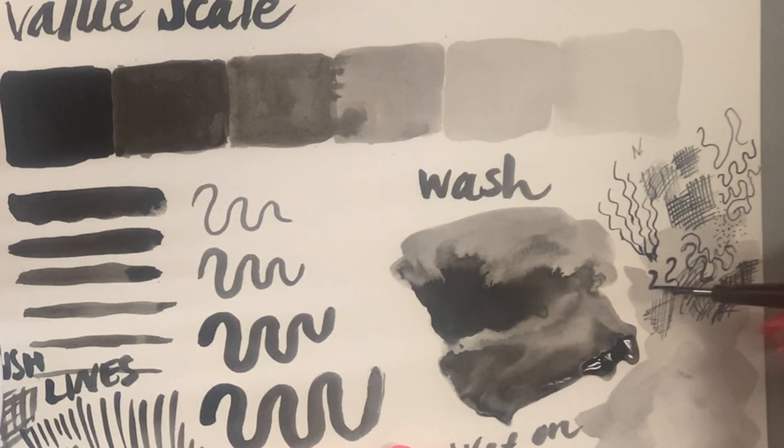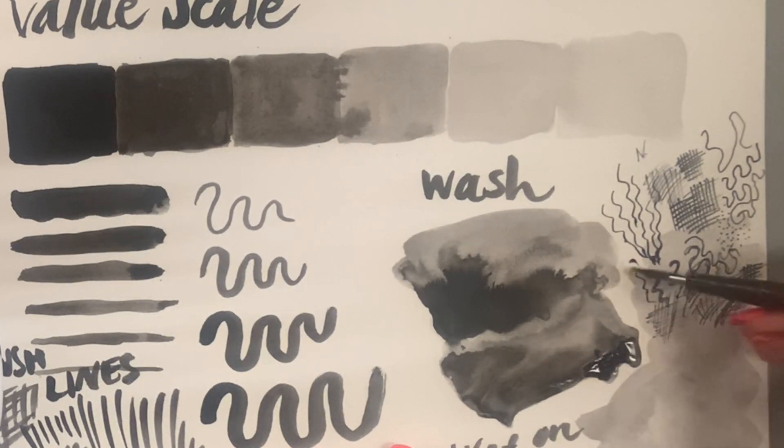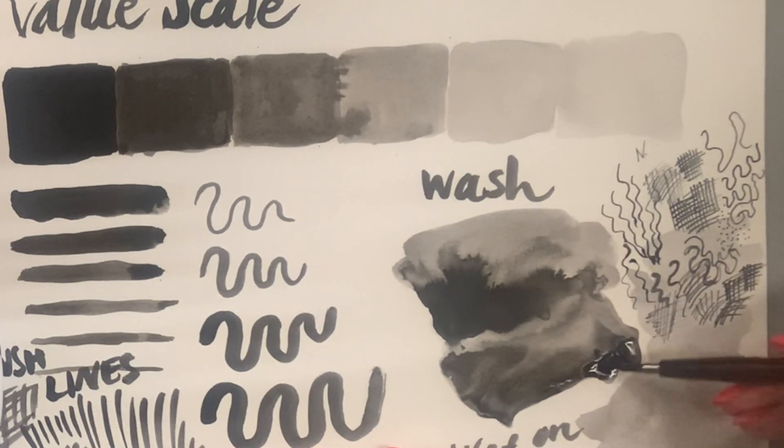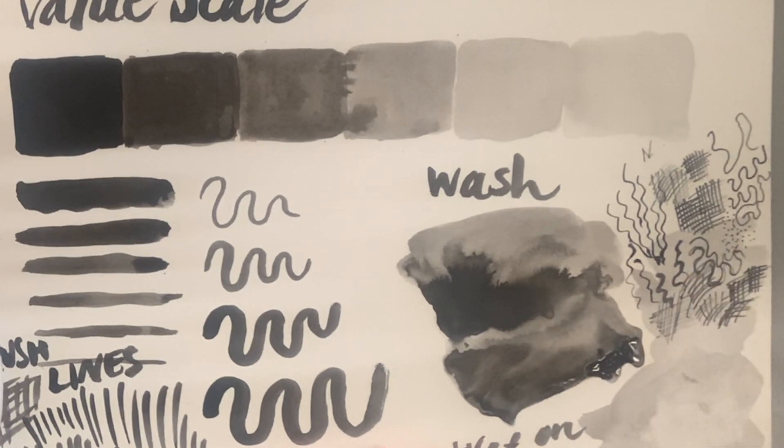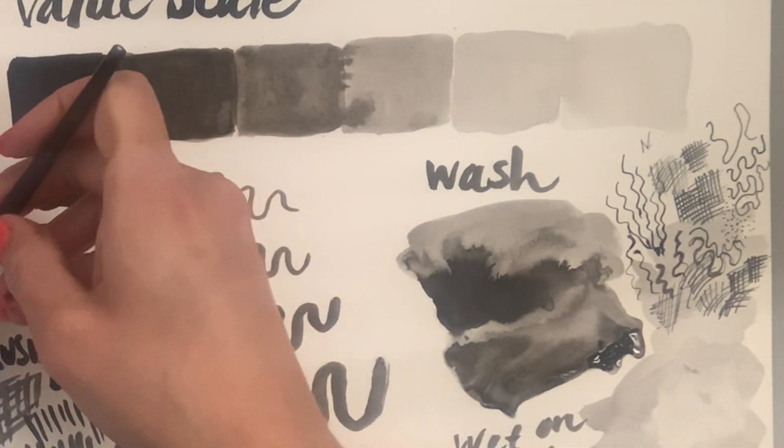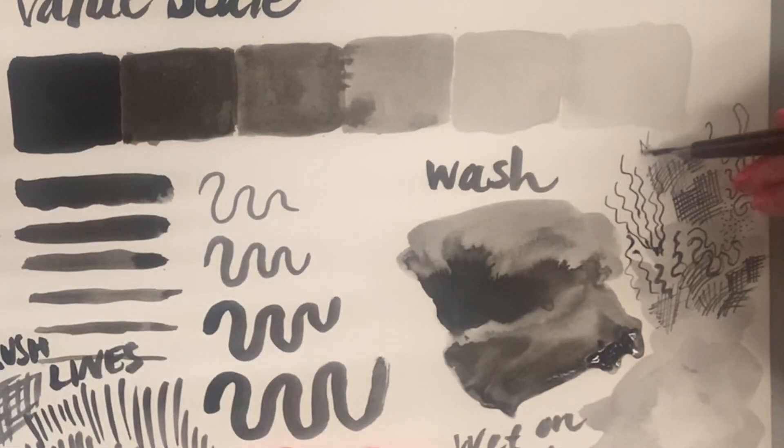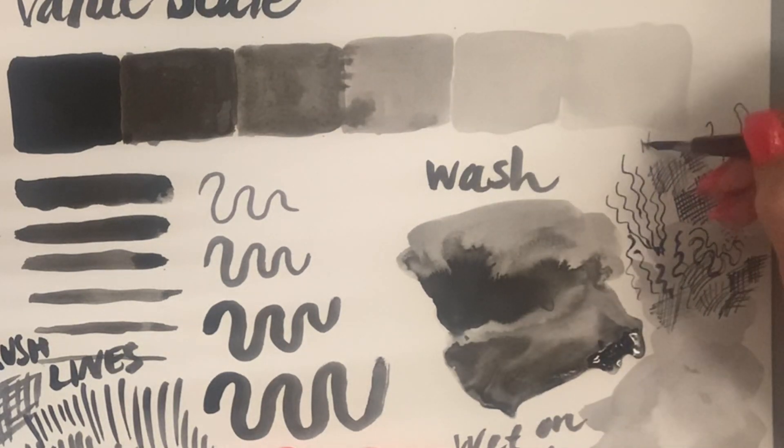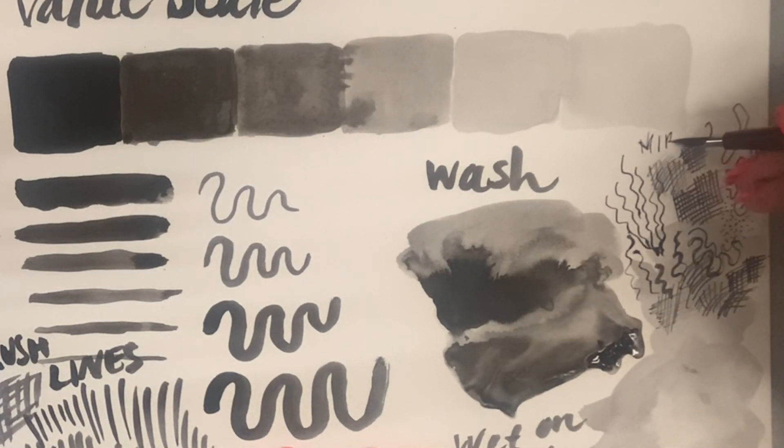I'm using some of that extra water from my washes because it hasn't dried yet, and you can see how the ink is bleeding out a little bit because it has more water than ink. So make sure you're dipping in your pure India ink, unless you like the gray kind of faded-out line.